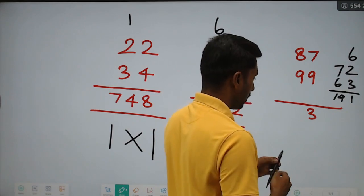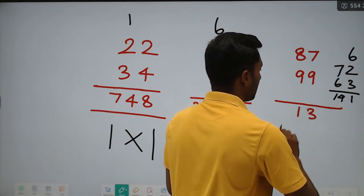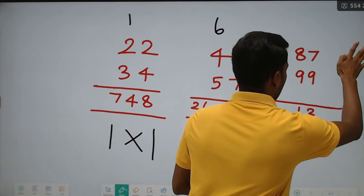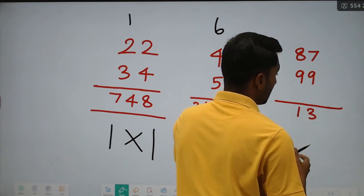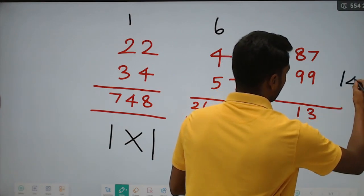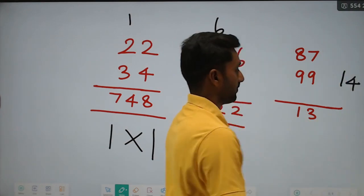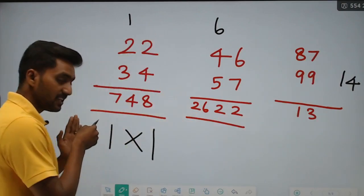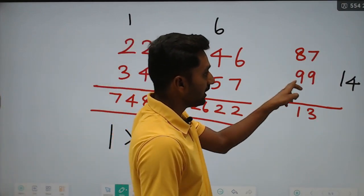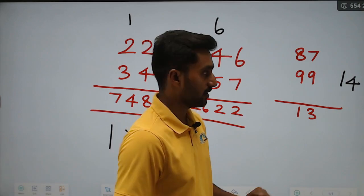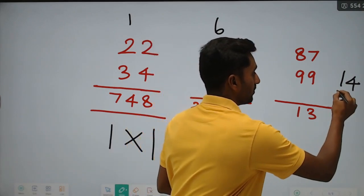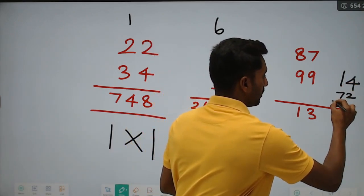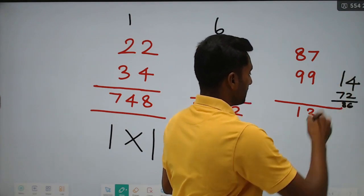14: write 1, remaining carry 14. Next straight cross — last again straight: 8 into 9 is equal to 72. Already 14 carry: 72 plus 14 is 86. So the final answer is 8613.